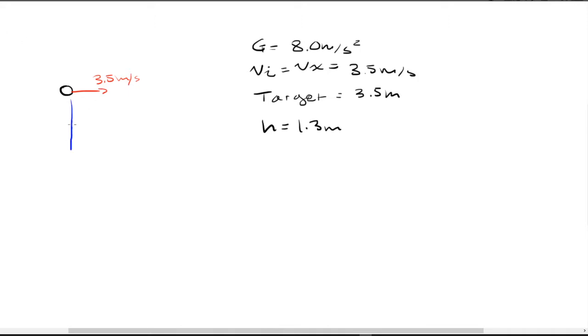And there's also the height that we have to take into account. And then what we're looking for is the target right here, which is 3.3 meters. This should be a 3 right here. And we want to know when the ball's let go, or where the ball needs to be let go from to land on the target.